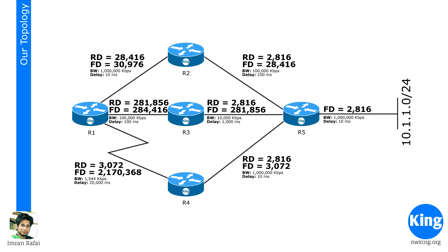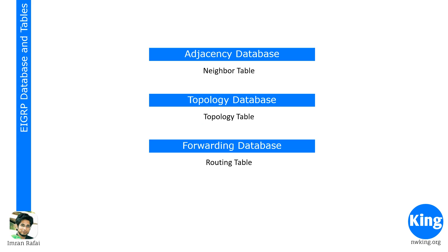So basically, enabling EIGRP is very simple and straightforward. You use 'router eigrp' with an AS number, then give the network command either without wildcard mask or with wildcard mask. Just like OSPF, EIGRP has three tables: the neighbor table, the topology table, and the routing table. We already looked at the routing table — let's look at all three again.